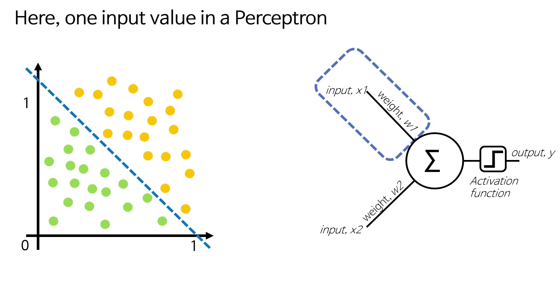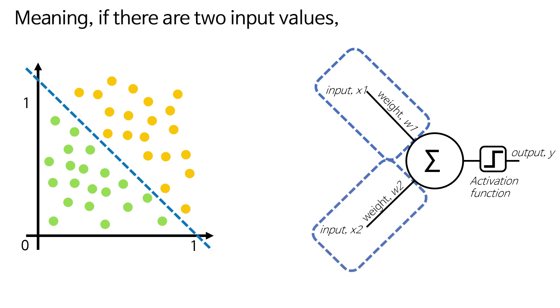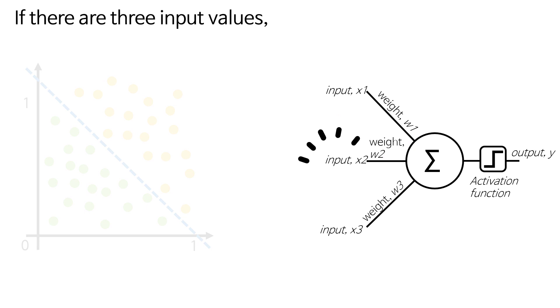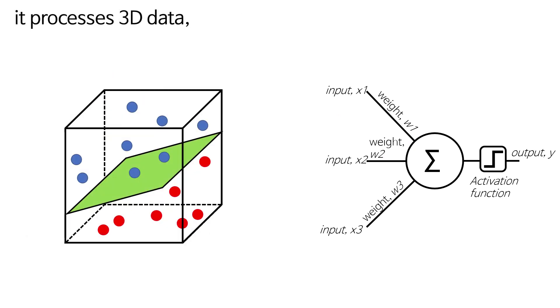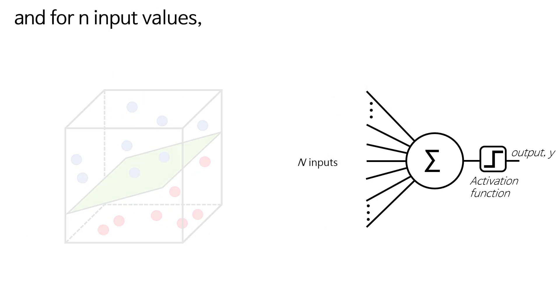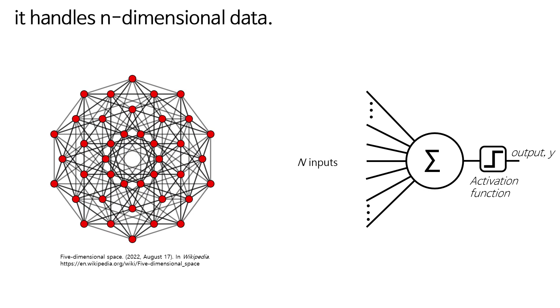Here, one input value in a Perceptron implies processing data in one dimension. Meaning, if there are two input values, it is a linear separator handling 2D data. If there are three input values, it processes 3D data, and for n input values, it handles n-dimensional data.